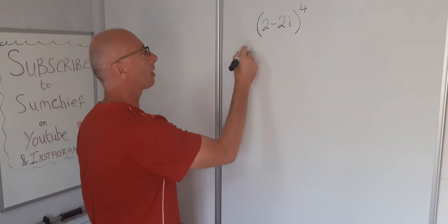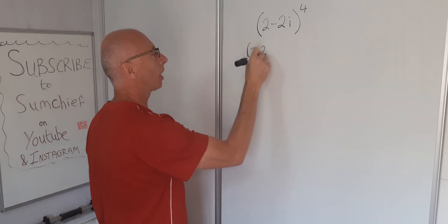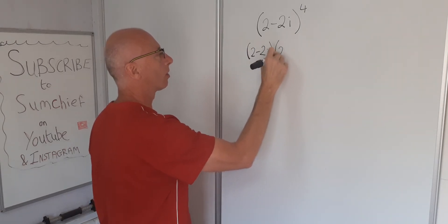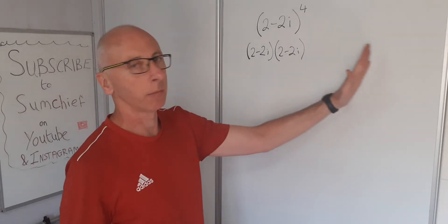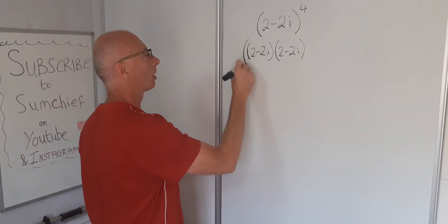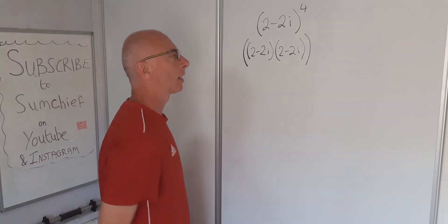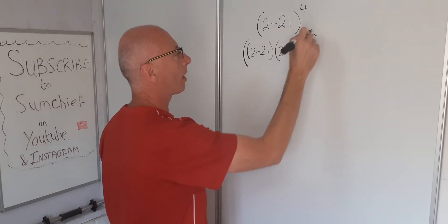So what we can say is this is 2 minus 2i times 2 minus 2i. Instead of writing them all out, it's going to take too long. Put brackets around that and then we can square that.